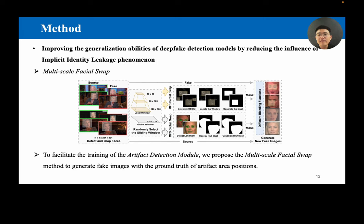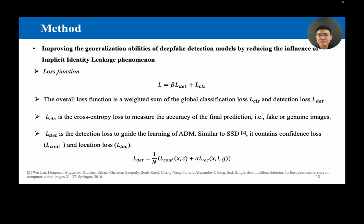However, the training of the artifact detection module requires fine and local precision annotations of artifact areas on images, which are usually not available in public deepfake datasets. Therefore, to facilitate the training of the artifact detection module, we propose the multiscale facial swap method to generate fake images with the ground truth of artifact error positions, which also enriches artifact features in the training phase. The overall loss function for our ID-Unaware DeepFake Detection Model is a weighted sum of the global classification loss and detection loss. L_CLS is the cross-entropy loss to measure the accuracy of the final prediction, that is fake or genuine images. L_DET is the detection loss to guide the learning of artifact detection module. Similar to SSD, it contains confidence loss and location loss.